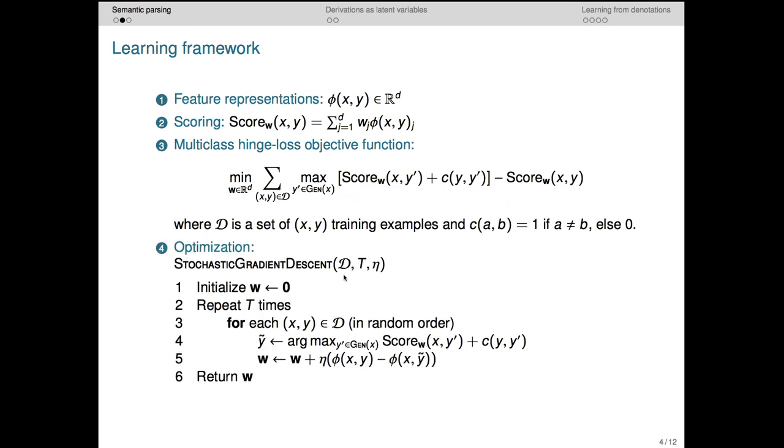The final piece is an optimization algorithm. Here we use stochastic gradient descent. Its inputs are a set of training pairs d, which contains sentences paired with their logical forms, as well as a number of training iterations t, and a learning rate eta, which could be set at some small value like 0.1 or computed based on t.